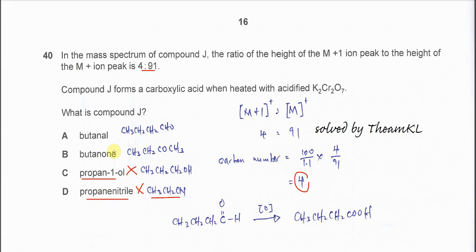So we need to know which one can be oxidized. Butanal is an aldehyde, so it can oxidize to form carboxylic acid. Butanal oxidizes to form butanoic acid. Butanone cannot be oxidized.